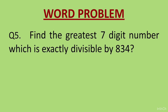Question 5. Find the greatest 7-digit number which is exactly divisible by 834. For this, write the greatest 7-digit number which is 9999999, then divide it by 834. Whatever remainder you get, subtract that remainder from 9999999. This will give you the number which is exactly divisible by 834.